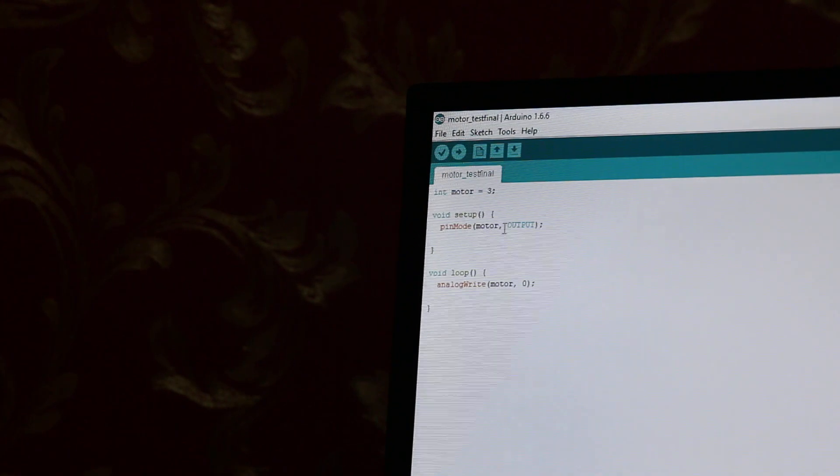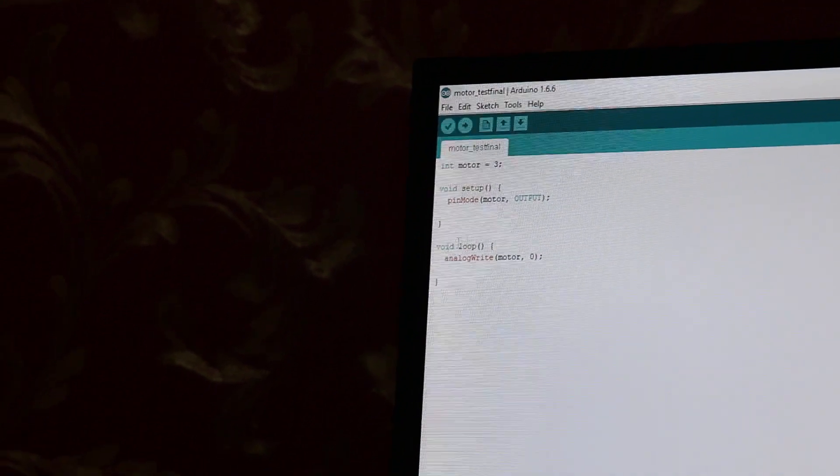So the program is pretty simple. Basically what you have to do is first define the motor as a variable. So we're going to say as output pin 3. So int motor equals 3. Then we go to the setup. We just have to make that pin an output pin. So pin mode, motor, comma, output.